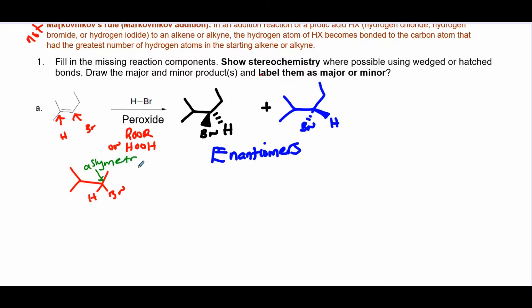...since it's asymmetric, we need to show stereochemistry, and you're going to get enantiomers—these two guys here. So if the bromide approaches from the top, that's what you get. If the bromide approaches from the bottom, that's what you get.